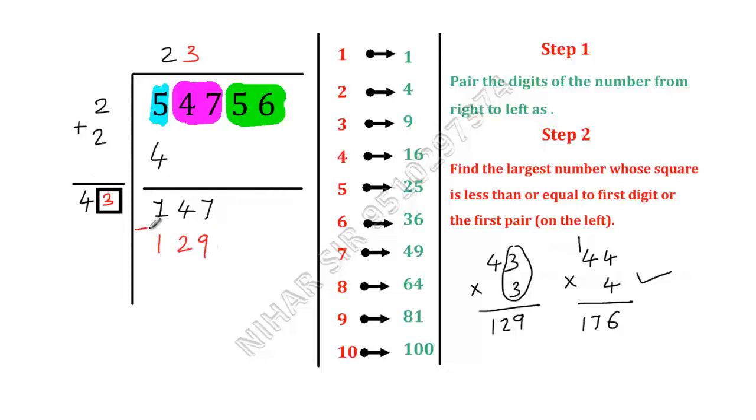So 43 times 3 is equal to 129. Now we will subtract 129 from 147. So that will be 17. I will cancel out this 3 and here 17. 17 minus 9 that is 8. 3 minus 2 is 1 and this is 0.